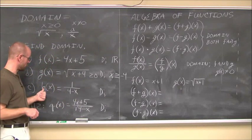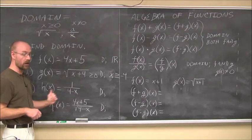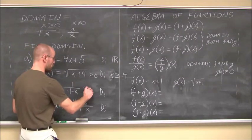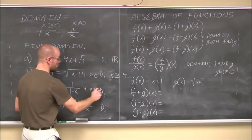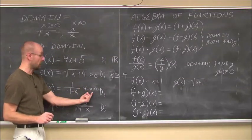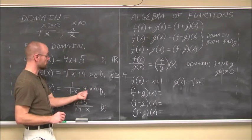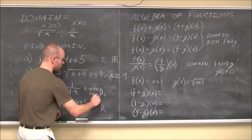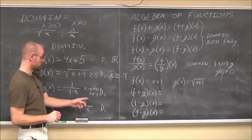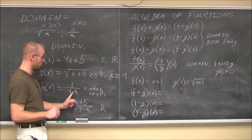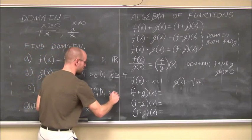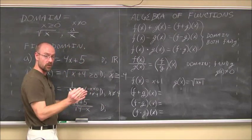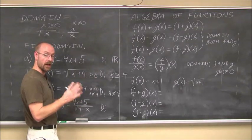For h of x equals 1 over (4 minus x), there is an x in the denominator, and we can never divide by 0. So 4 minus x cannot equal 0. Solving: x cannot equal positive 4. We check: 4 minus 4 is 0, and we can never divide by 0. So the domain is x such that x is not equal to 4, or in interval notation: negative infinity to 4 union 4 to infinity.